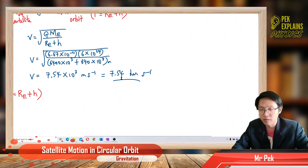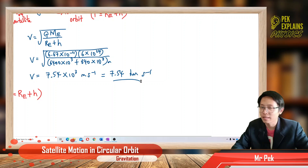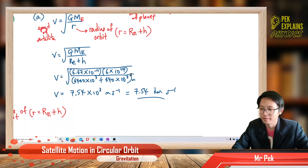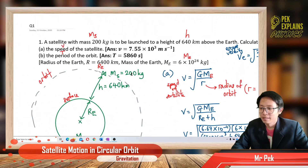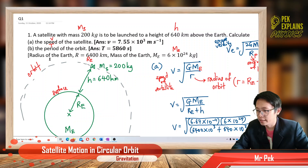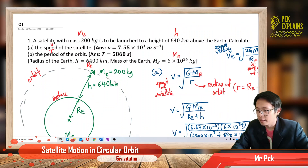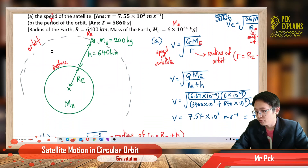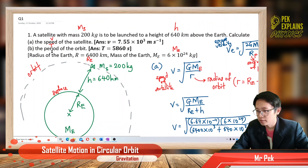Imagine this satellite colliding with a spaceship — disaster would happen. Very high kinetic energy, what a high impact. Now, find the period of the orbit.